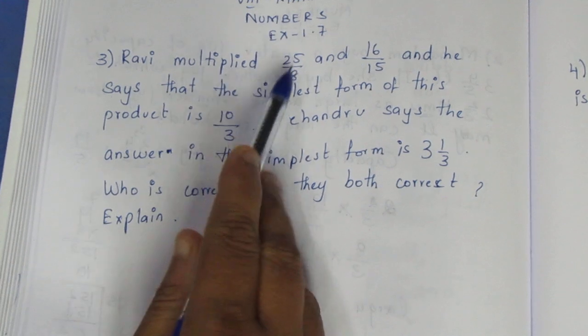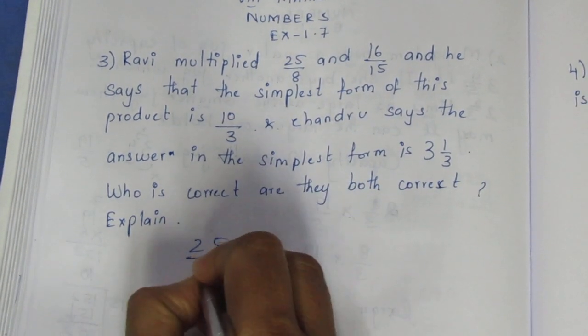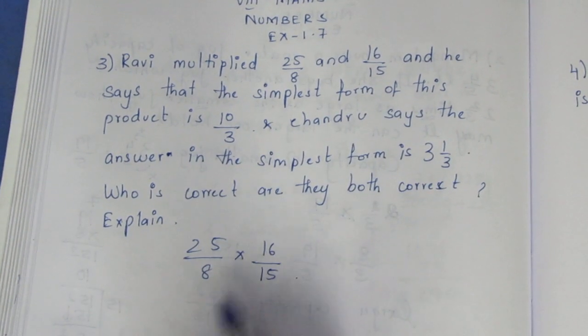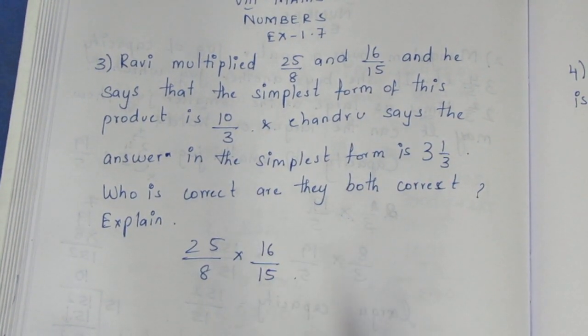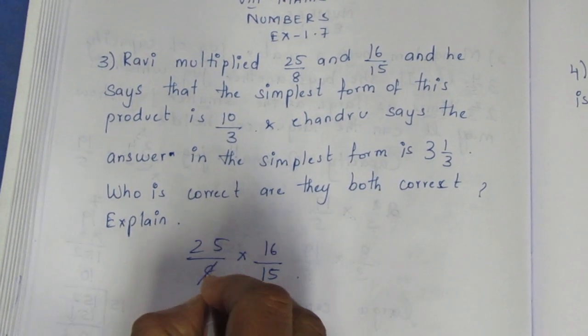First, we will multiply the two fractions: 25 by 8 times 16 by 15. We cancel the numerator and denominator.